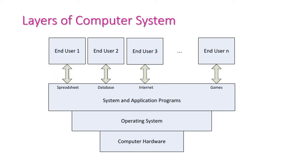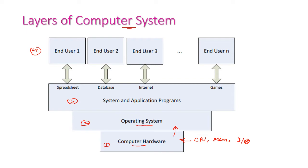Next let us see the layers of the computer system. Here we have four different layers: first is computer hardware, second is operating system, third is system programs and application programs, and the last layer is the end user layer. The computer hardware layer includes CPU, memory, I/O devices, and other devices — that is all the bare metal modules connected to the computer. On top of computer hardware we have the operating system.